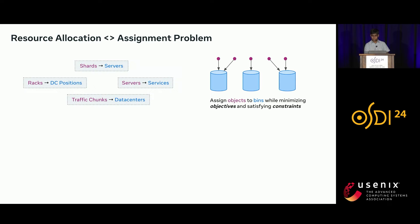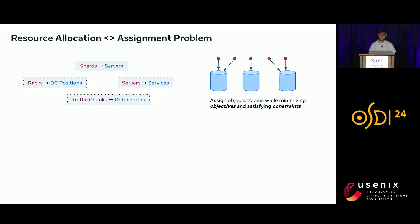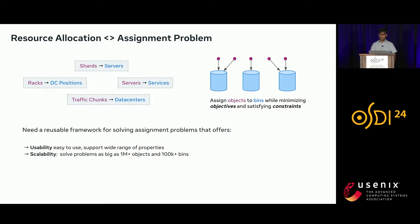There is one common theme across all these problems: we are given a bunch of objects and a bunch of bins, and we want to assign objects to bins while minimizing a certain objective and satisfying a set of constraints. For the sharding problem, shards are the objects and servers are the bins; for hardware placement, racks are the objects and DC positions are the bins. One approach is to design domain-specific solutions, but that is not efficient. What we need is a reusable framework for solving assignment problems of this nature.